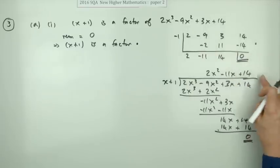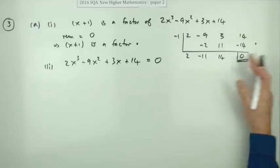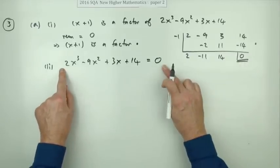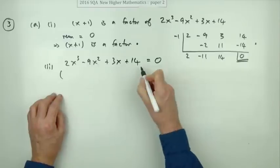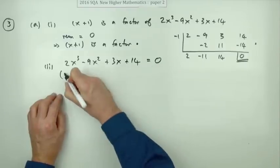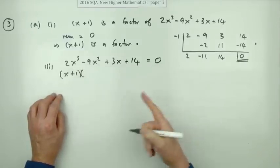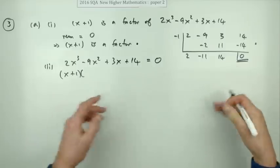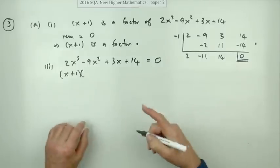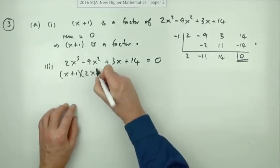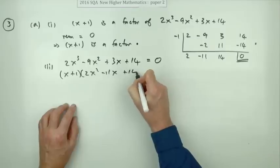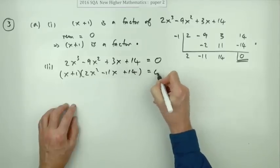The long division is why synthetic division is quicker, but either way gives the solution to part two: solve that equation. To do that you factorize — it's equal to zero, x plus one is a factor — and carrying out the division, either synthetically or by long division, gives 2x² minus 11x plus 14 equals zero.